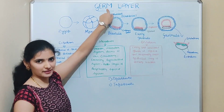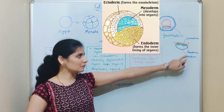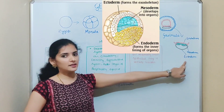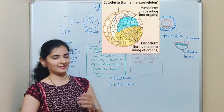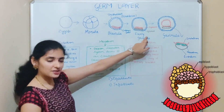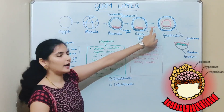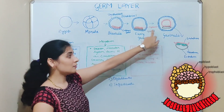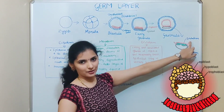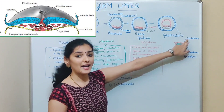It is the embryoblast or inner cell mass which produces the germ layers. There are mainly three germ layers: the outer ectoderm, the inner endoderm, and the middle mesoderm. These three germ layers finally produce the tissues and organs in the adult body. The embryoblast differentiates into two layers — the epiblast and the hypoblast. The epiblast produces ectoderm and the hypoblast produces endoderm.